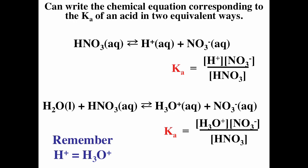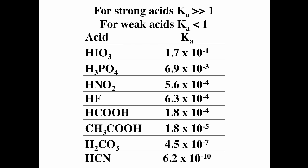Again, please remember hydronium ions and H⁺ are the same thing. Here's a table of Ka values — all of these are weak acids. For strong acids, we consider the Ka to be basically infinite, very very large. Here the largest Ka is 0.17, which is still pretty small. The larger the Ka, the stronger the acid. So while all these acids are weak acids, the strongest one on the table is at the top, and the weakest is hydrogen cyanide at the bottom. The Ka can tell you the strength of the acid.